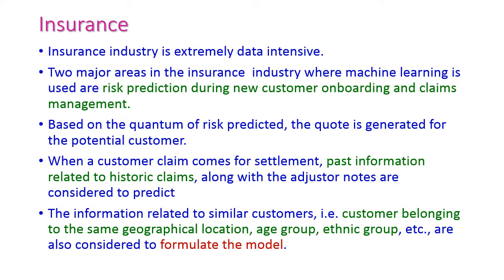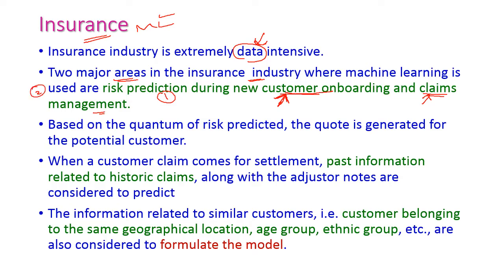In the insurance industry, machine learning algorithms are very much required because those industries use extremely sensitive private data. There are two major areas where machine learning algorithms are used: the first is risk prediction during new customer onboarding — we need to predict whether the customer will pay the amount on time — and the second is claim management, handling all processes when a customer tries to claim an amount. Machine learning is very important in both these areas.